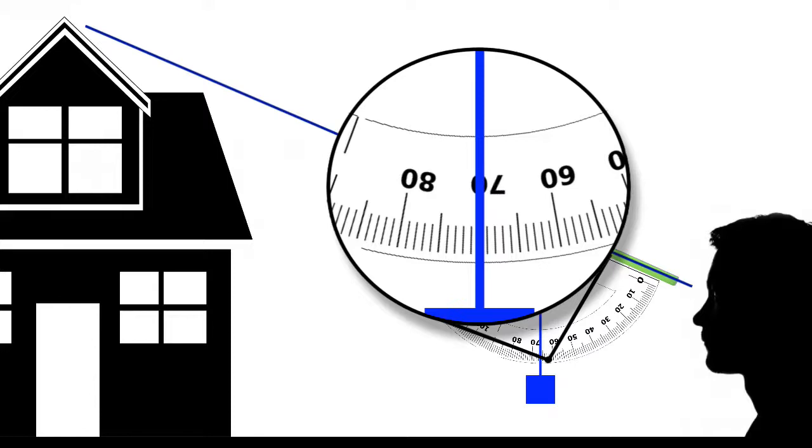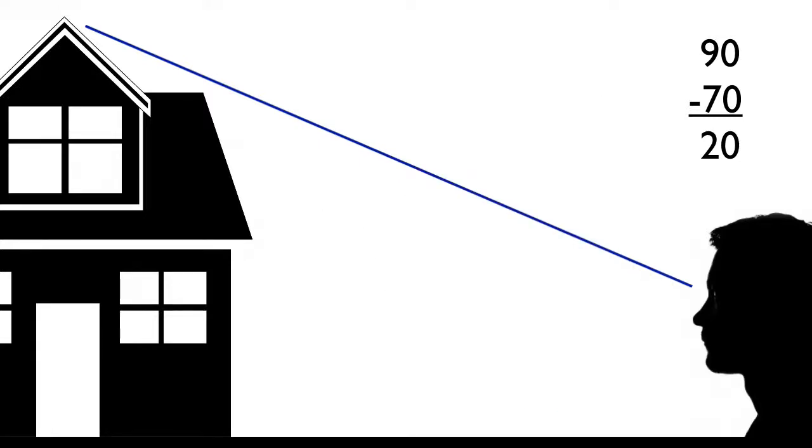The angle of elevation is the same as 90 degrees minus the angle you read off the protractor. So if the protractor reads 70 degrees like it does here, you subtract 70 from 90, which is 20. So the angle of elevation of this house from eye level would be 20 degrees.